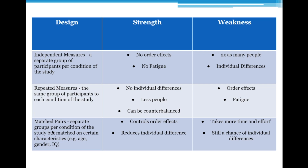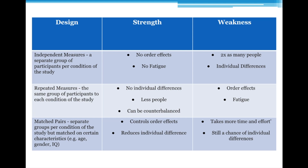Finally, we've got the matched pairs design. This is meant to be the best of both worlds. You have separate groups, which means no order effects — it controls for order effects. But what you try to do is match the participants on the key characteristics that could affect the DV, reducing individual differences. So if your test is on memory, you might pre-test IQ, because that could potentially have an effect. You'd get people of similar IQ, put one in each condition, and they're almost being tested against each other. That's a matched pairs design — matched into pairs, one participant played off against the other in different conditions.